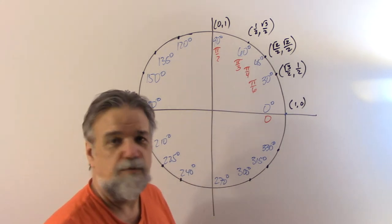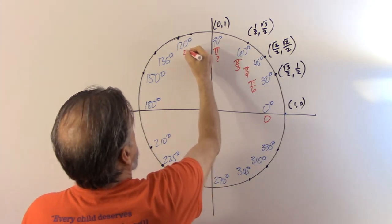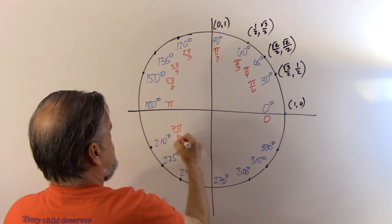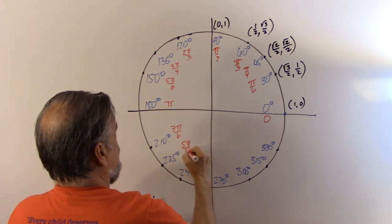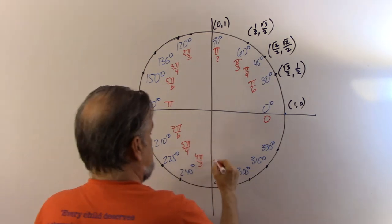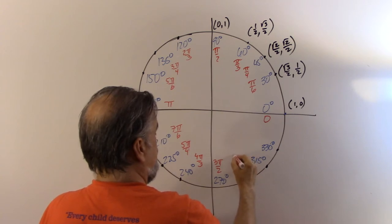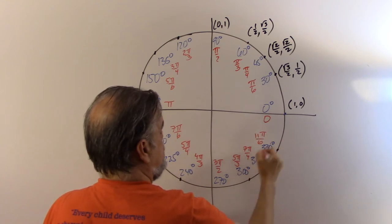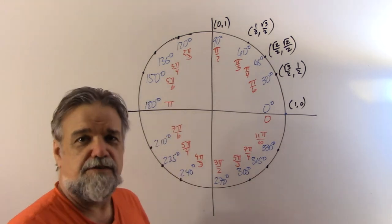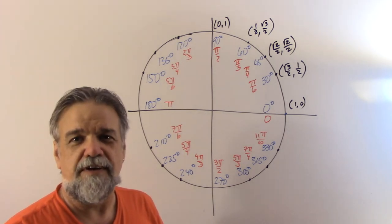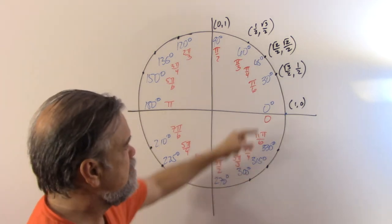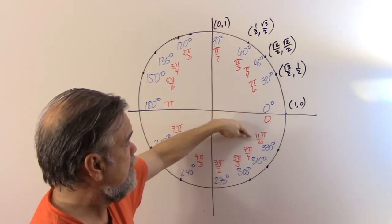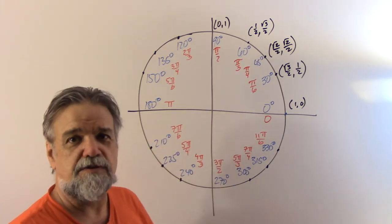Let's go ahead and put in the radians that correspond to all those degrees: 2π/3, 3π/4, 5π/6, π, 7π/6, 5π/4, 4π/3, 3π/2, 5π/3, 7π/4, and 11π/6. I didn't do the arithmetic for every single one on the fly — I have it in my head. But it's not hard to get; you just subtract from 2π: 2π minus π/6, minus π/4, minus π/3. It's really not difficult to get those degrees and radians at all.